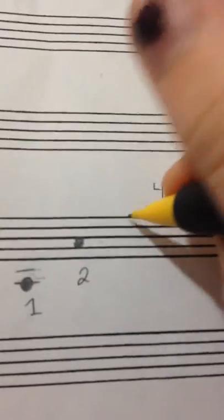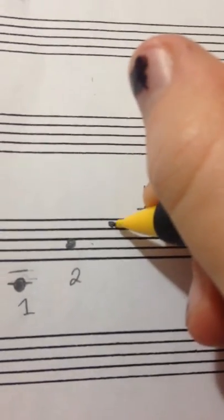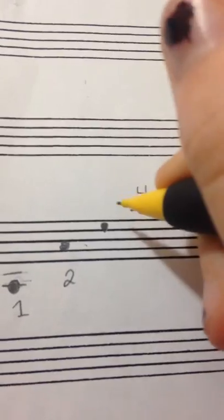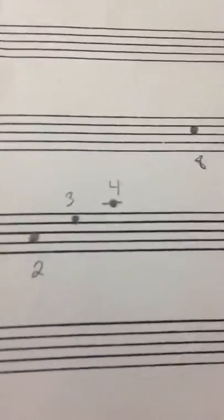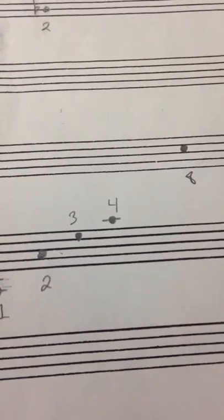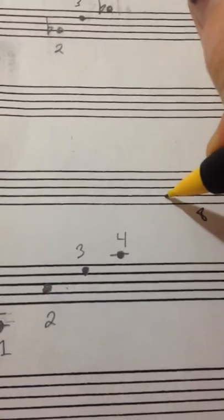Now I'm going to fill in the gap between 2 and 4 and write the perfect fifth, which is a G. Next thing I'm going to do is write in number 6, which is also going to be G.